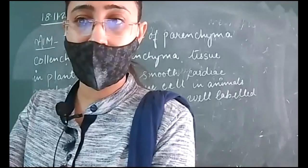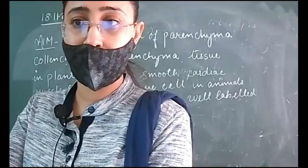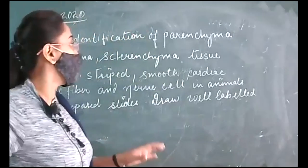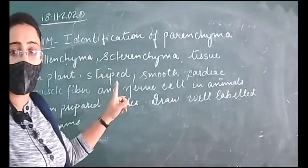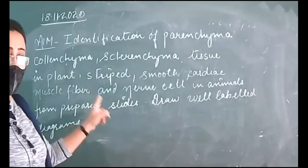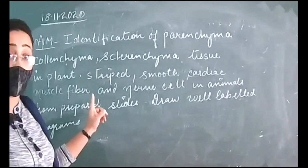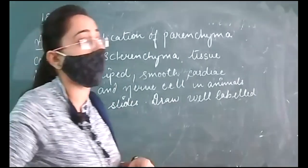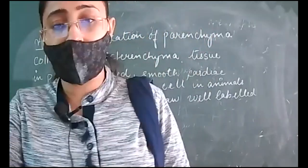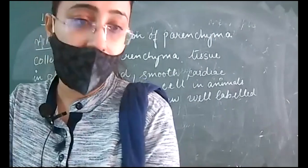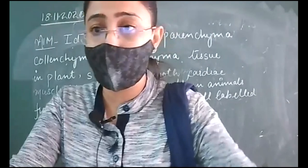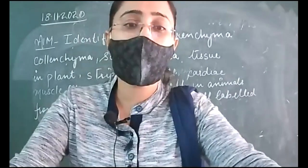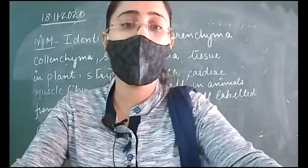Today we are doing the practical with the help of a video. The aim of the practical is identification of parenchyma, colenchyma, and sclerenchyma tissue in plants, and striated, smooth, and cardiac muscle fibers and nerve fibers in animals, from permanent slides, and to draw well-labeled diagrams. Since this is an online class, we will see a video to help with identification from the permanent slides available in the lab.